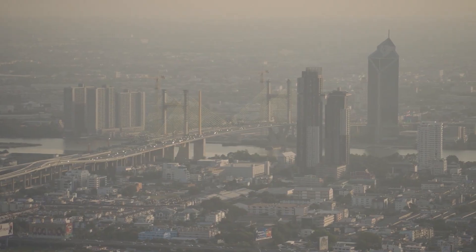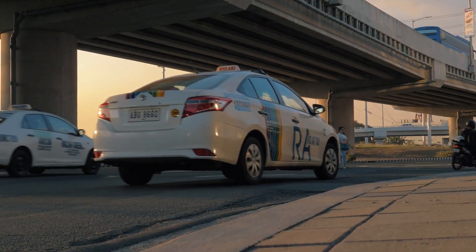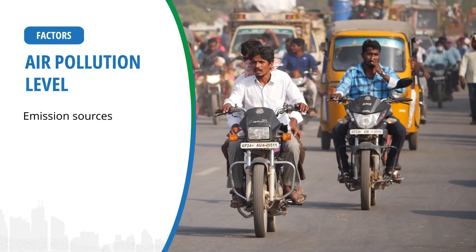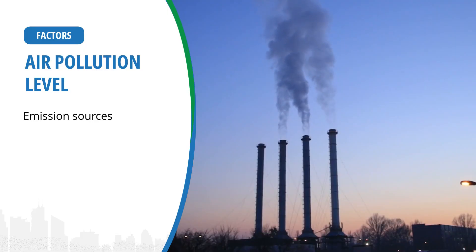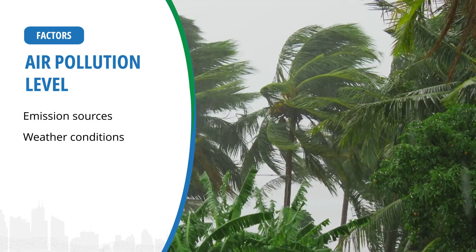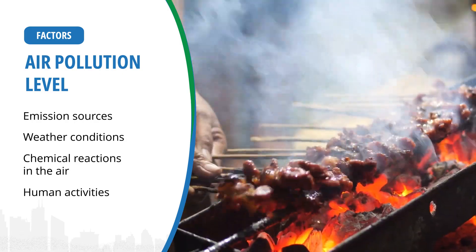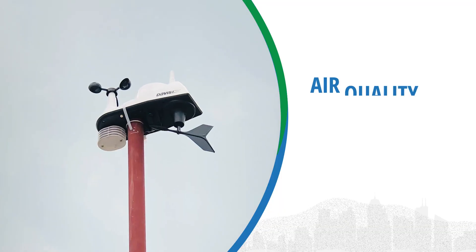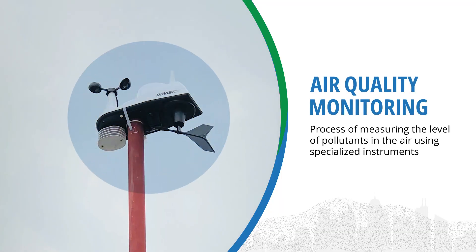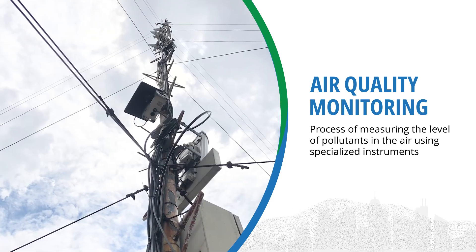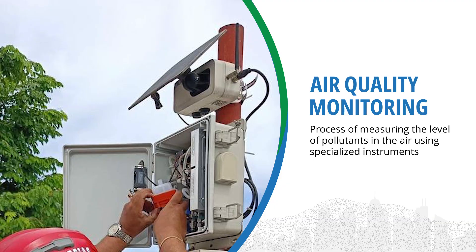Several factors can also influence air pollution levels in a particular area. These include proximity to emission sources, weather conditions, chemical reactions in the air, and human activities. With the help of air quality monitors, we can measure air quality in different locations. Monitoring data along with information on emission sources guides decision makers in addressing poor air quality.